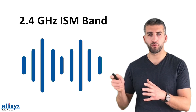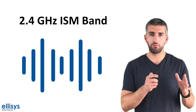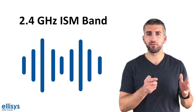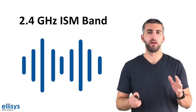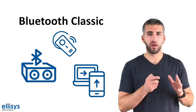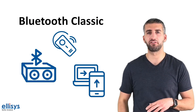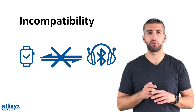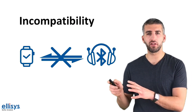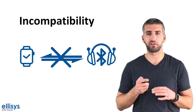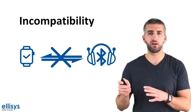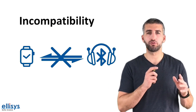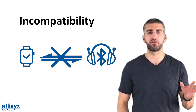BLE operates in the 2.4 GHz ISM band, which is the same spectrum used by Bluetooth Classic, the original Bluetooth, and Wi-Fi, as well as other technologies such as Zigbee. One important thing to note is that Bluetooth Classic is not compatible with BLE — a BLE device cannot communicate directly with a Bluetooth Classic device. For example, your smartwatch cannot talk directly to your wireless headphones. However, some devices implement both BLE and Bluetooth Classic and allow talking to these devices independently.